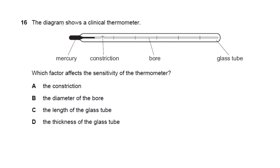Question 16: which factor affects the sensitivity of a clinical thermometer? The bore is responsible. The narrower the bore, the more sensitive the thermometer. The constriction, glass tube length, and thickness are not the key factor. The diameter of the bore is the answer.